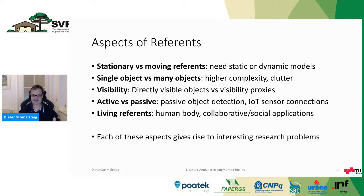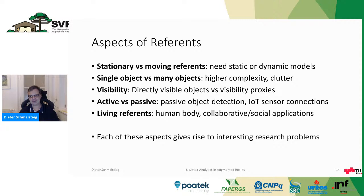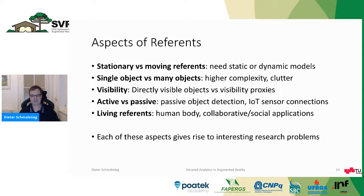There's the issue of visibility: if you're interested in buried pipes, you can't see them, but you can see the street level, which acts as a visibility proxy for what lies underneath — we often have these occlusion situations. We can have active or passive referents: passive referents are objects that just need to be detected and tracked, while active referents include Internet of Things devices that give us sensor data in real time. We can even have living referents such as a human body — your own body or the bodies of other people — for collaborative or social applications. Each of these aspects gives rise to interesting research problems in situated visualization.